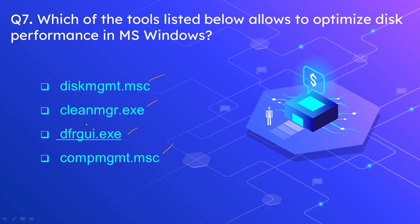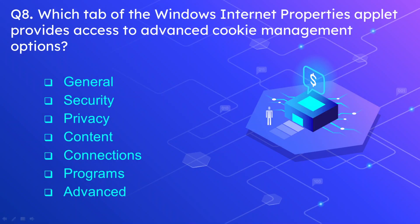Question number 8: Which tab of the Windows Internet Properties applet provides access to advanced cookie management options? The options are General, Security, Privacy, Content, Connections, Programs, and Advanced. The correct answer is the General tab.